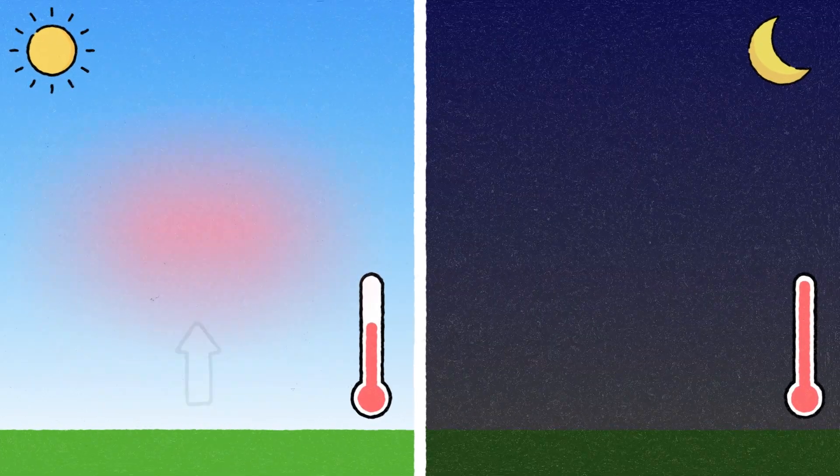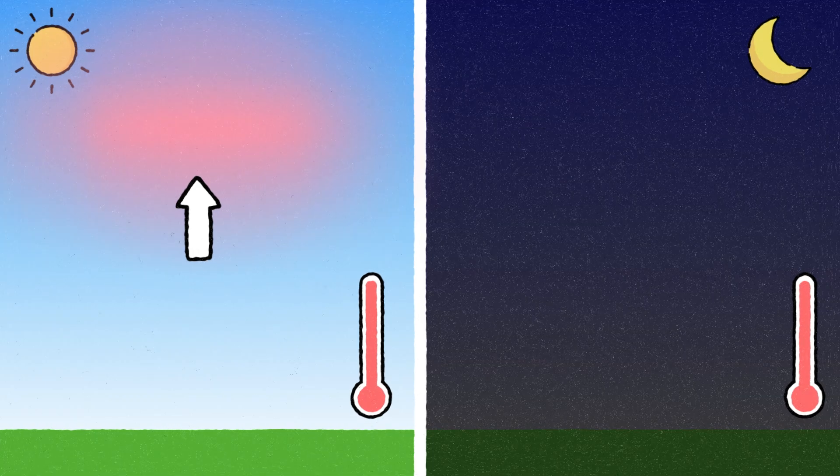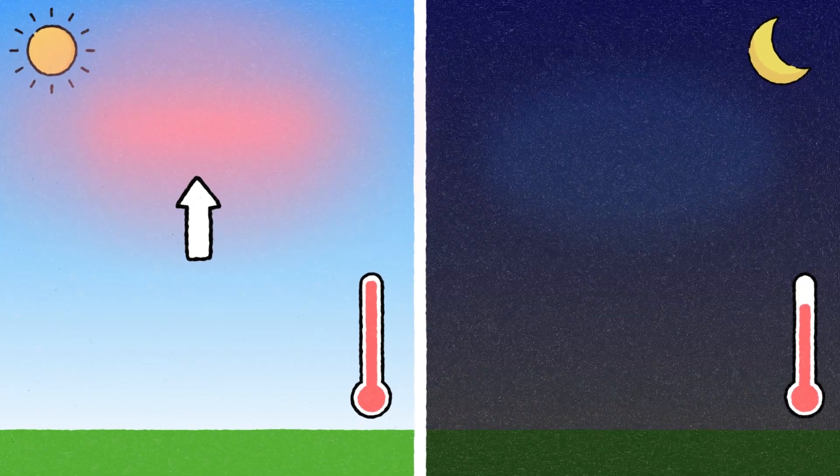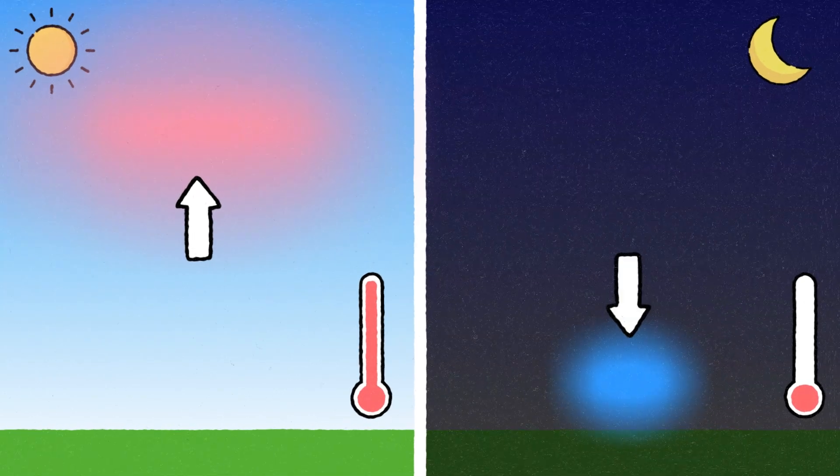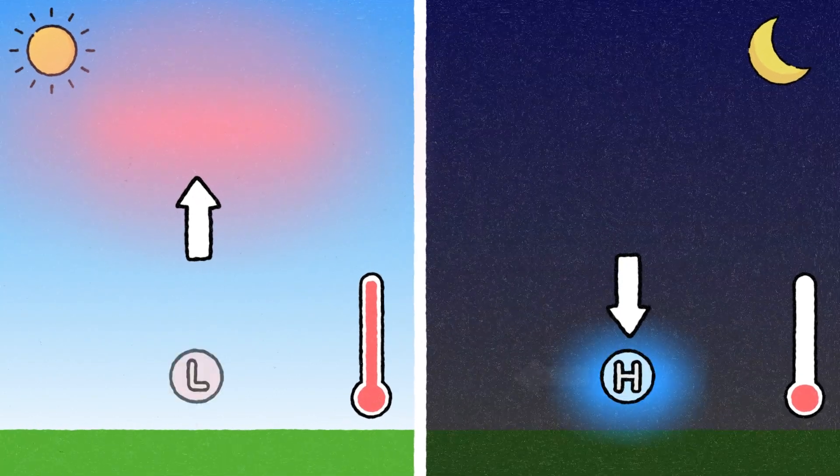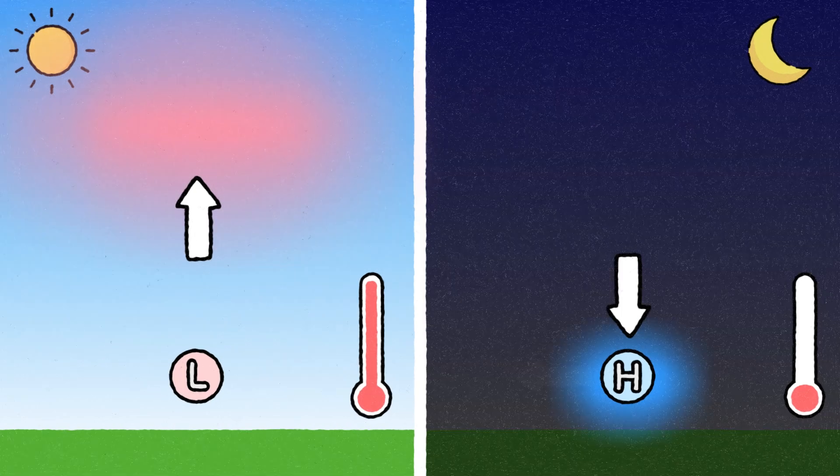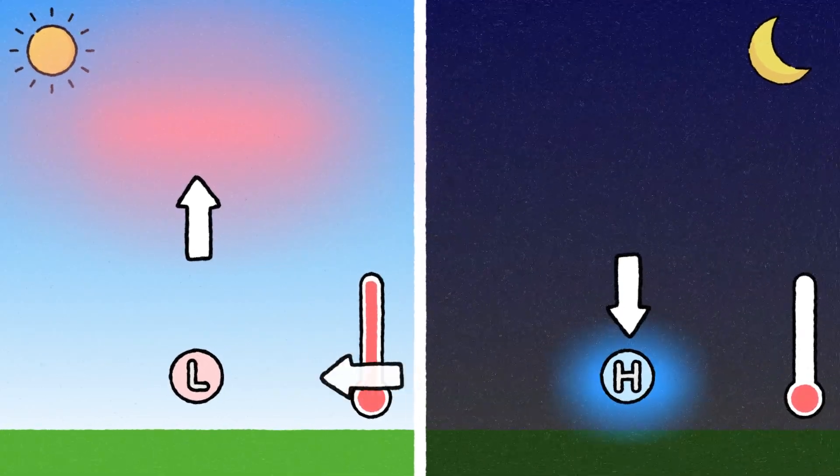As warm air rises, the pressure at the surface decreases because there's less air pressing down. When cold air sinks, it presses down more on the surface, increasing the air pressure. Again, air moves from high pressure areas to low pressure areas, which creates wind.